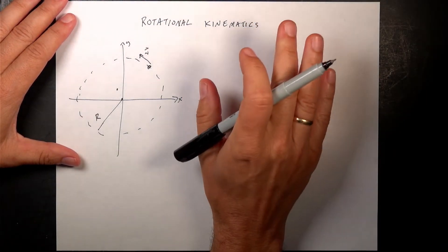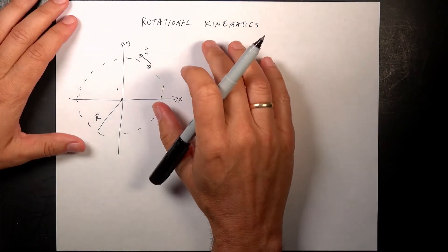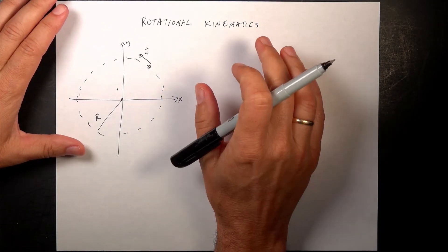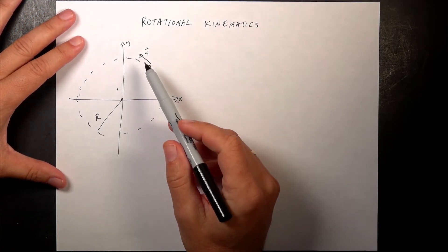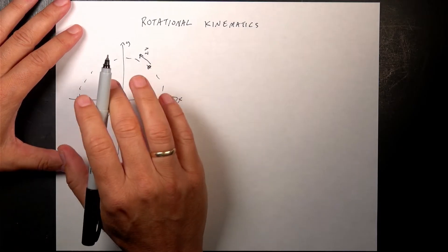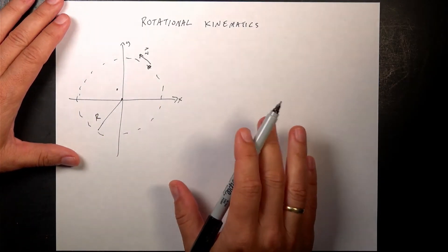Okay, so a lot of times you deal with objects moving in a circle. And there are a couple different ways to look at this. We could just say the object moving in a circle has some velocity v, vector, and that velocity changes in direction, but it's moving at a constant magnitude of velocity. That's one way.